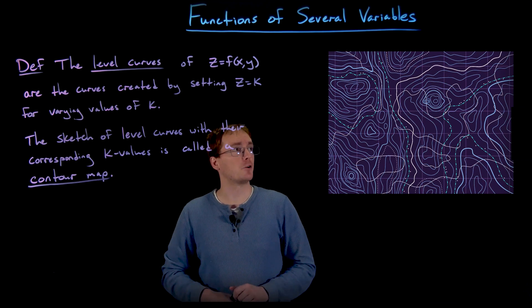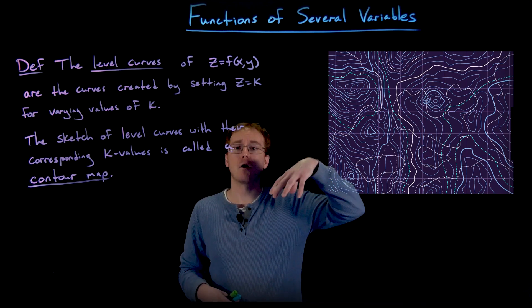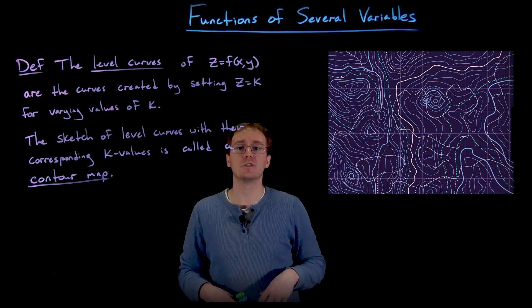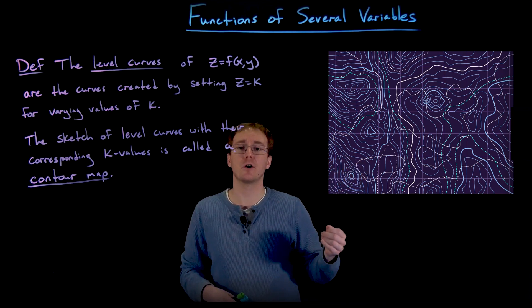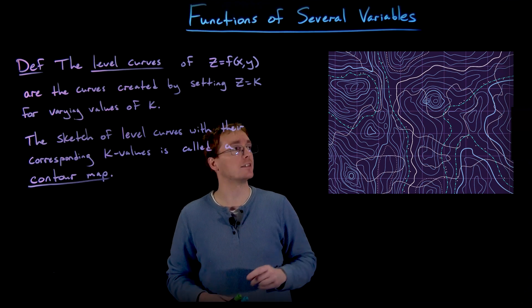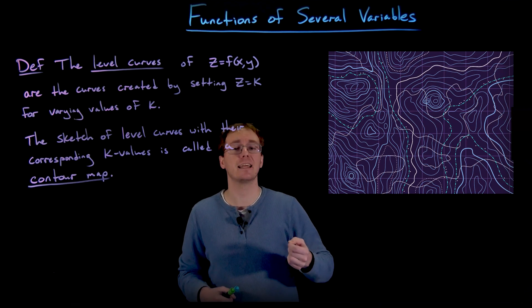And so if you look at a topographical map, you can see we're looking at our surface from above looking down onto it. And what we see are all these lines labeled with different elevation values. So as long as you're traveling along the same line, you are staying at the same elevation.